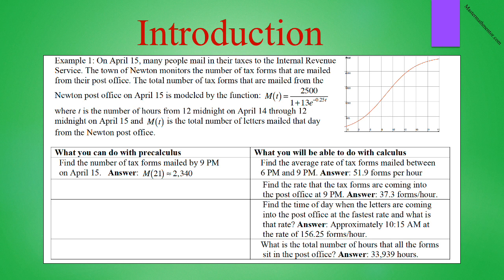But with calculus, we can do so much more. I won't explain how these answers came about. After all, that's the goal of the course. But with calculus, we could find the average rate of tax forms mailed between 6 and 9 p.m. That answer is 51.9 forms per hour. We could find the rate that the tax forms are coming into the post office at 9 p.m. That answer is 37.3 forms per hour. We could find the time of day when the letters are coming into the post office at the fastest rate, and what is that rate? And the answer is approximately 10:15 AM at the rate of 156.25 forms per hour. And we could find what is the total number of hours that all the forms sit in the post office, and the answer is 33,939 hours. Obviously, with calculus, we can do very much more than with pre-calculus.